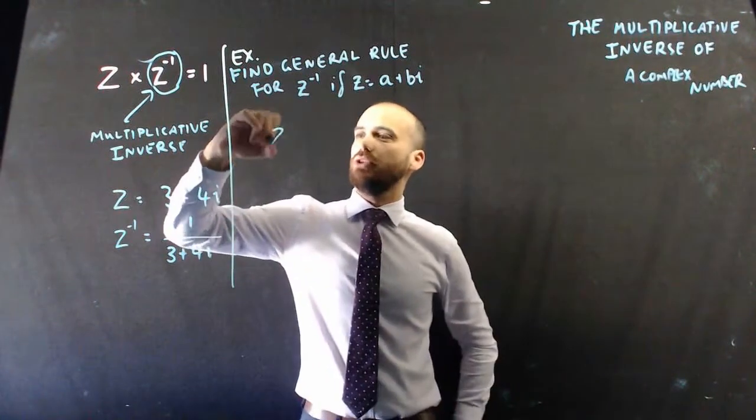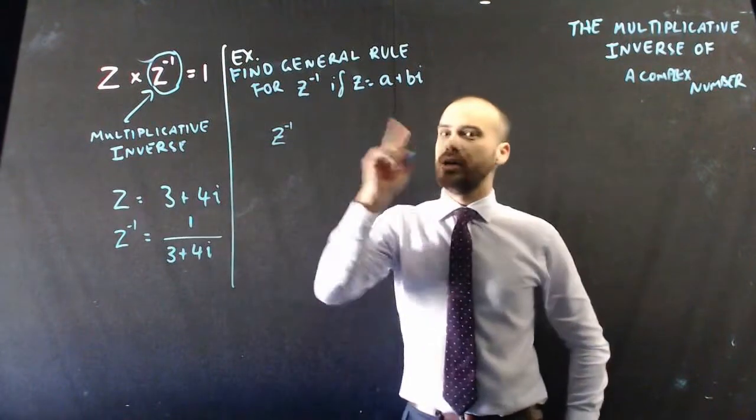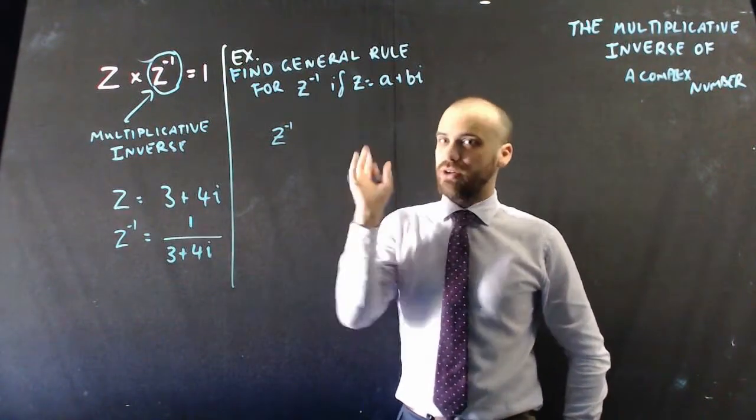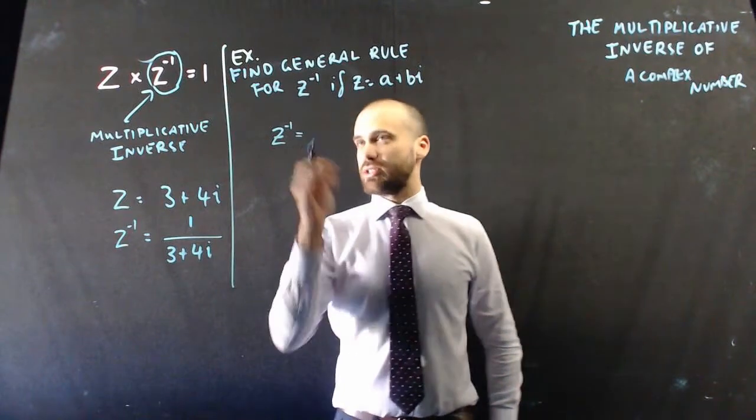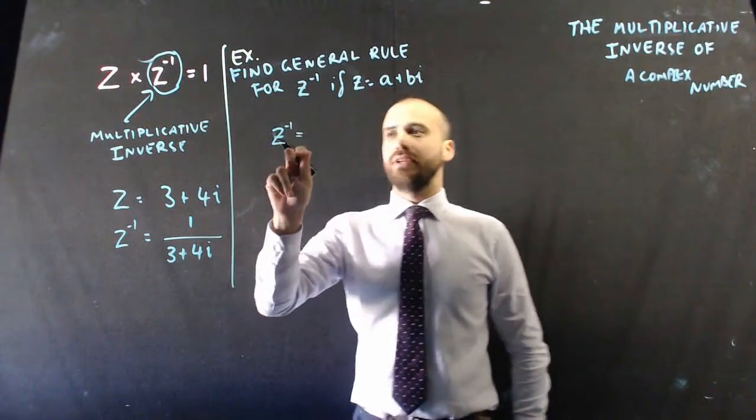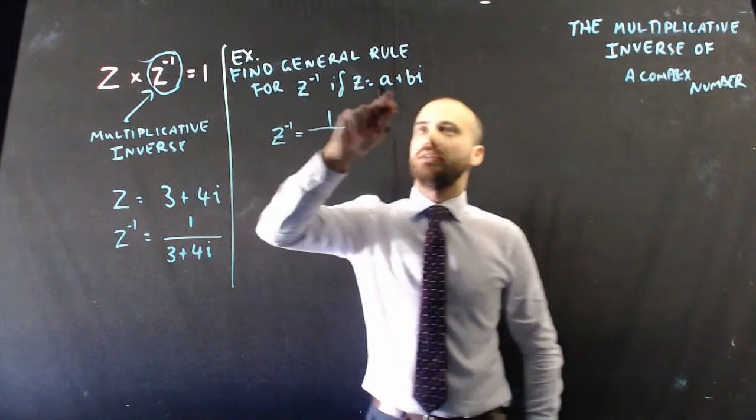So the multiplicative inverse. Before I go on, you should just do this. You should pause the video and you should do it yourself because it would be better if you proved it. Alright, so the multiplicative inverse is going to be 1 over a plus bi.